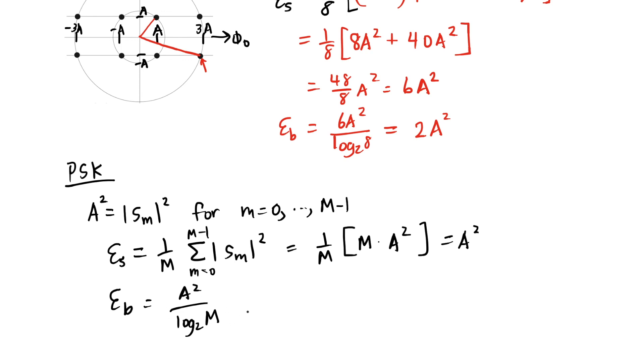The average bit energy is going to be a squared divided by log base 2 of m. Okay, so that's going to decrease as I increase capital M. But the average energy per symbol, remember, is constant.